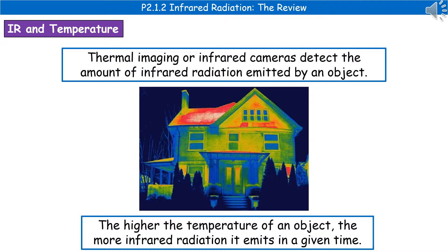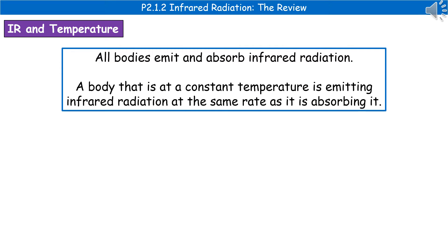Anywhere that's blue is losing the least. So we can see straight away in that photo that this house is losing an awful lot of heat from inside through the roof. These cameras work because when an object has a higher temperature, it will emit more infrared radiation in a given time. The increased amount of infrared is picked up by the sensor in the camera, giving us the variation in colors. We should also remember that all bodies emit and absorb infrared radiation, and if a body is at a constant temperature, it is emitting infrared at exactly the same rate as it's being absorbed — hence why the temperature doesn't change.